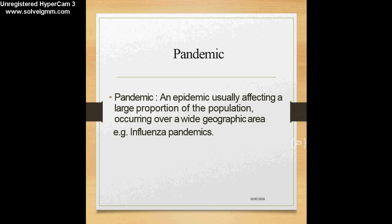The last term here is pandemic. A pandemic is an epidemic usually affecting a large proportion of the population and occurring over a wide geographic area. A pandemic involves major regions of the world — a worldwide epidemic. Examples include SARS and influenza pandemics, which have the propensity to spread and affect large regions of the world.